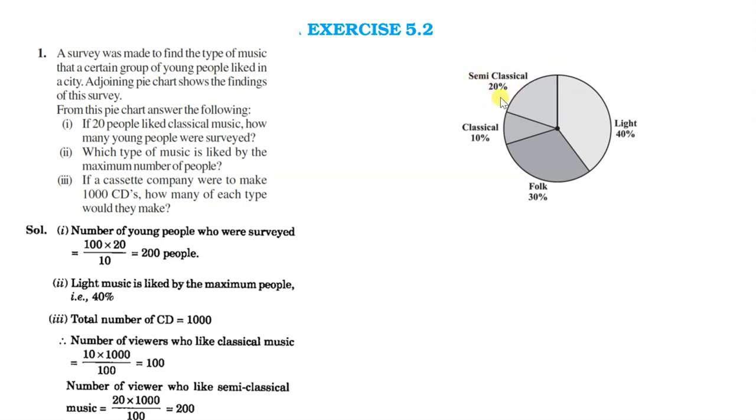For light music, it is 40 percent of 1000, that is 40 multiplied by 1000 divided by 100.